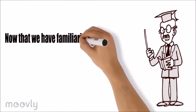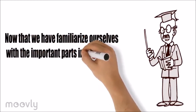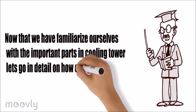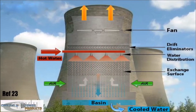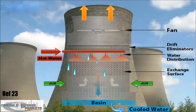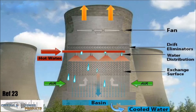Now that we have familiarized ourselves with the important parts of the cooling tower, let's go into detail on how exactly cooling towers work. Open cooling towers expose the hot water coming from the reactor's condenser directly to the atmosphere. This warm water is pumped to the nozzle by the condenser pump and is sprayed over the tower packing to increase the contact area, and air passes through the packing. There are some towers that feed the nozzles by gravity, using a water distribution basin. Most of the heat is removed by evaporation.